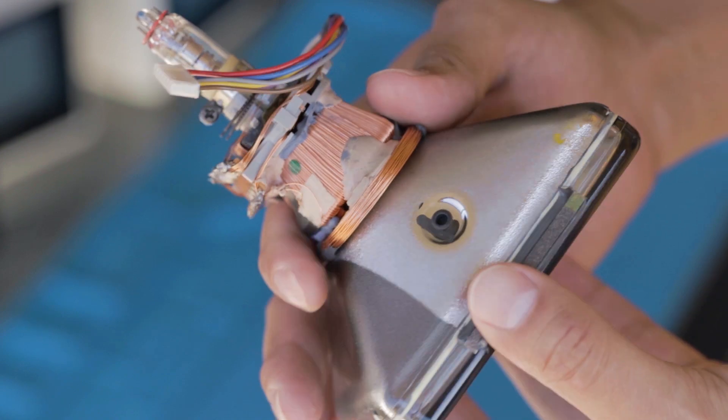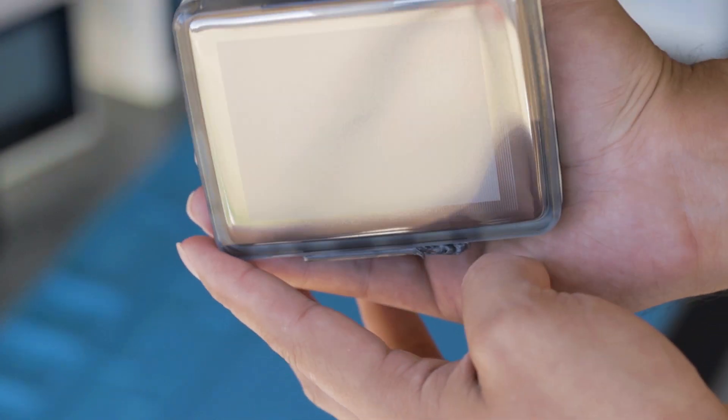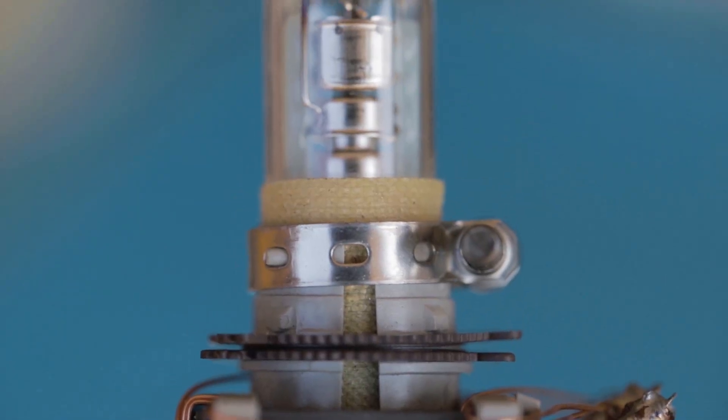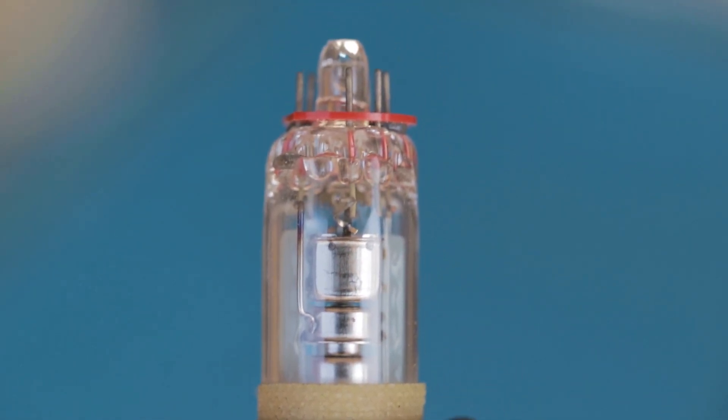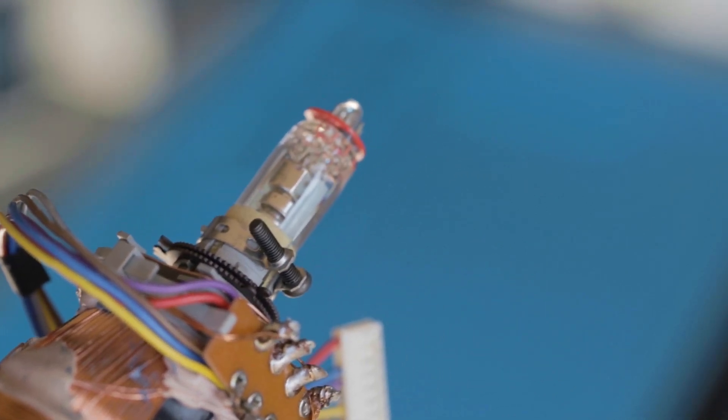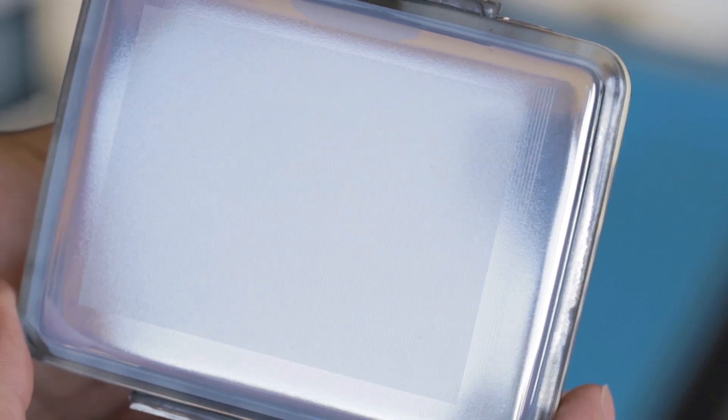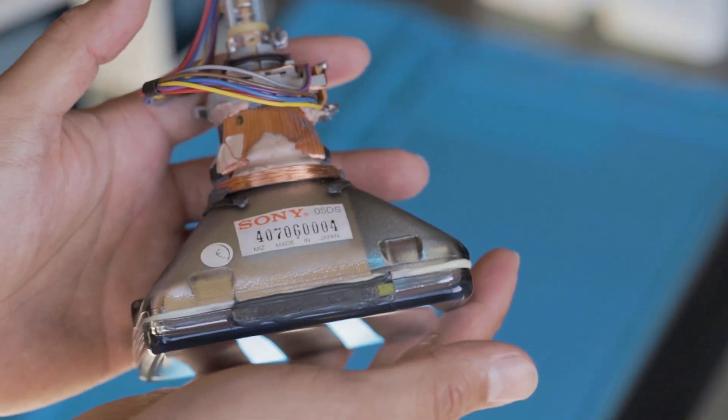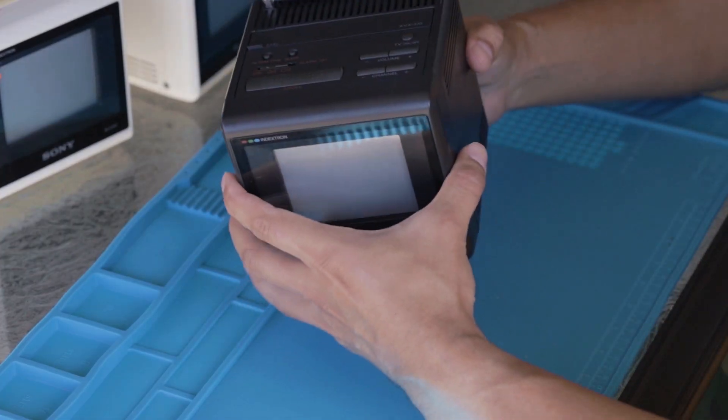Check out that tiny anode connector. These beam index tubes have short necks because they only have one cathode. There is no need for convergence hardware since there is only one beam. You can see the index stripes on the front of the screen. There are 148 triplets total with UV index stripes separating them. The tubes have a peculiar metallic reflection. Okay, now on to the teardown.